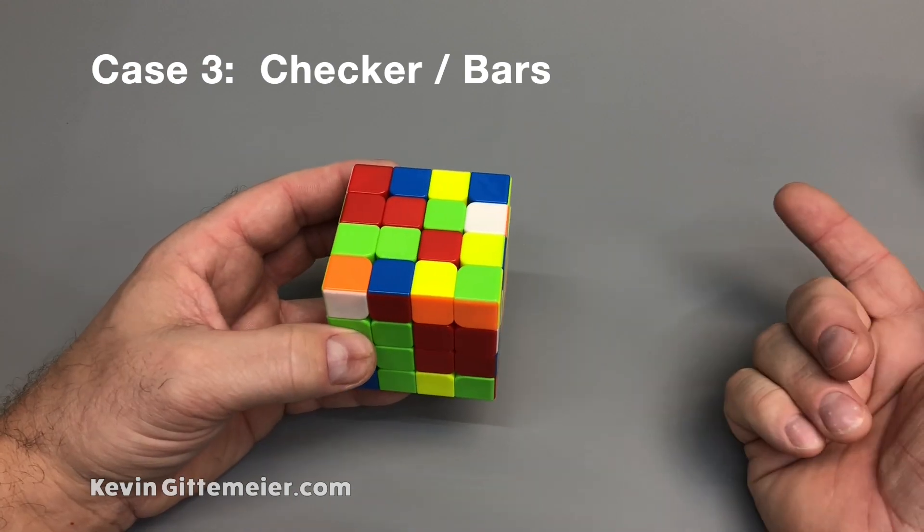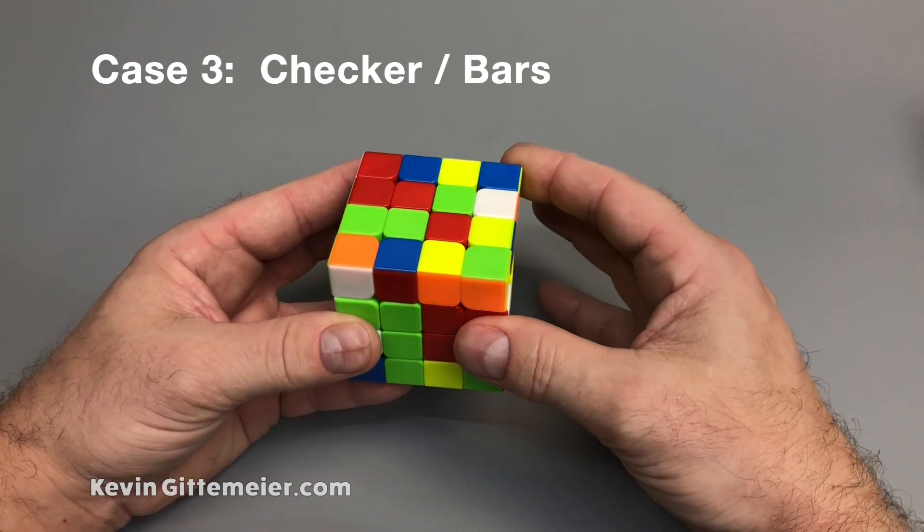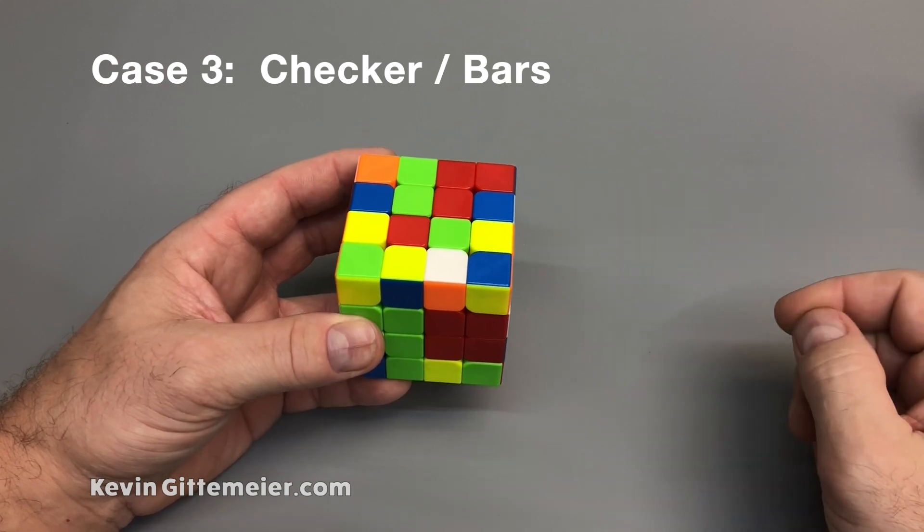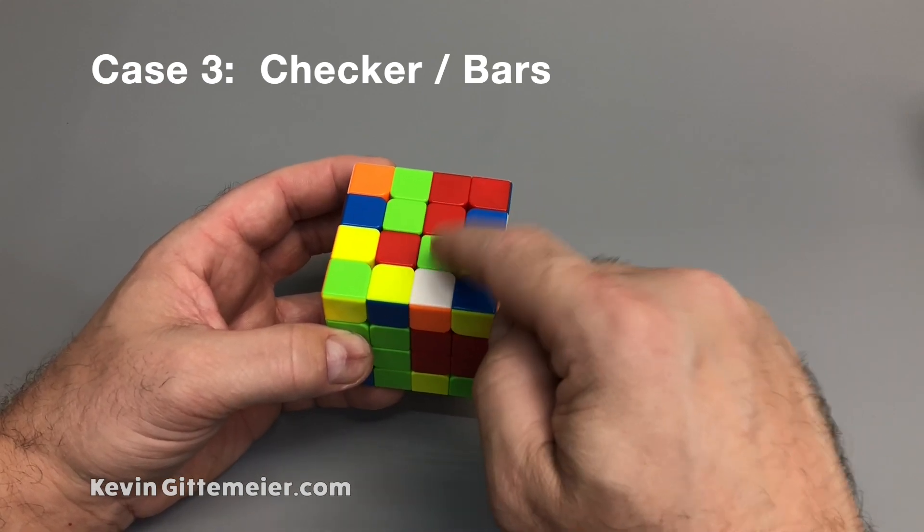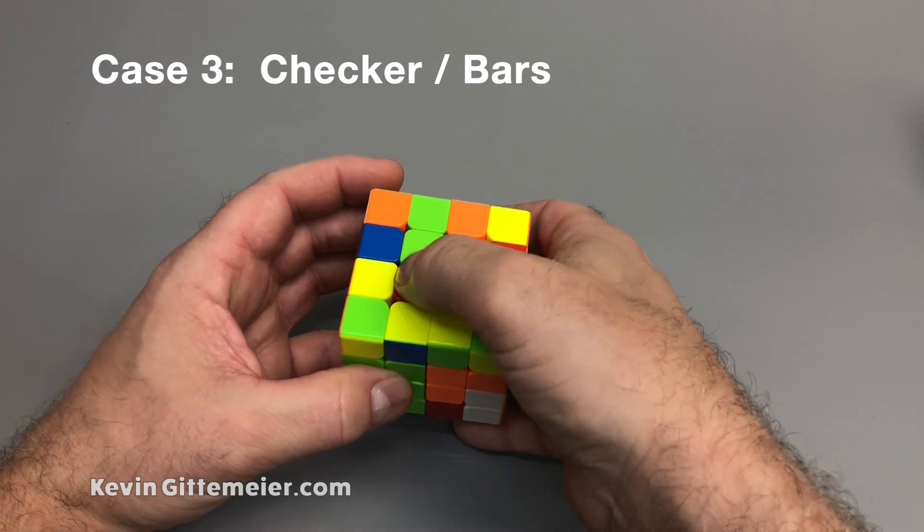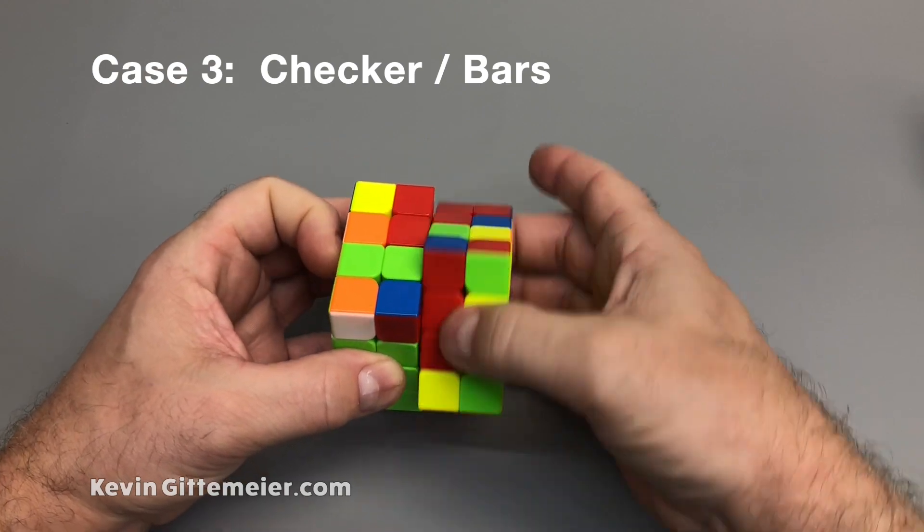That principle holds true no matter what iteration you use. So for example, if this checker pattern is slightly different, all I want to do is notice this green. So when I slice up, I just need to move this green to match it when I slice back.